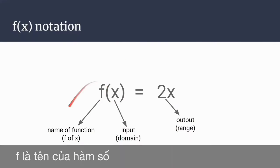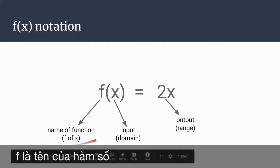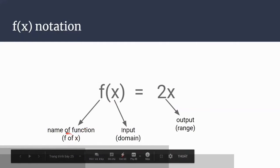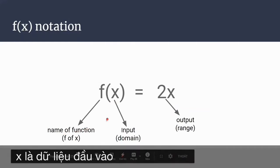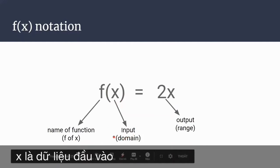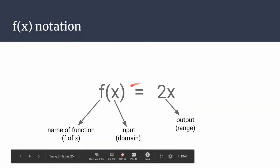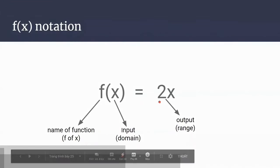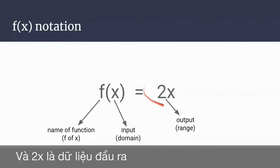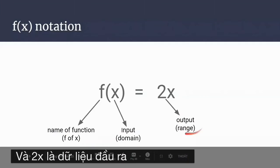f is the name of the function, and x is the input or the domain. This is the equal sign, and the expression after it is the output or range.